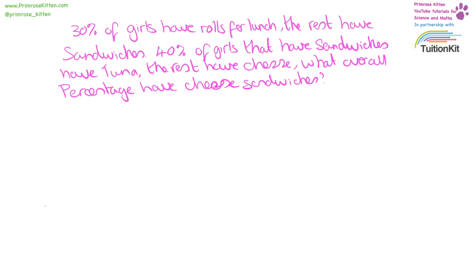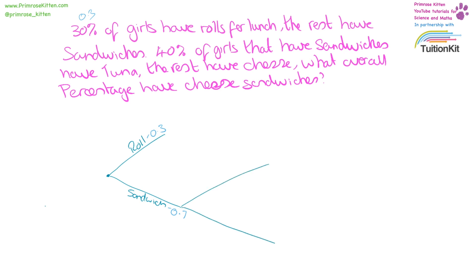What overall percentage have cheese sandwiches? We need to start with our probability tree and draw our options. So rolls and sandwich — 30% written as 0.3, so rolls is 0.3 and because the probabilities have to add up to 1, that means sandwich is going to be 0.7. We don't actually care about what happens with the rolls, we just care about what happens with the sandwiches.